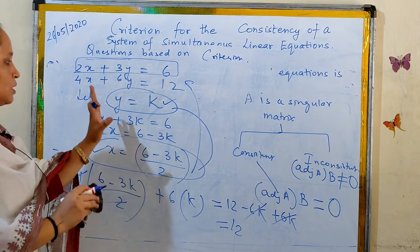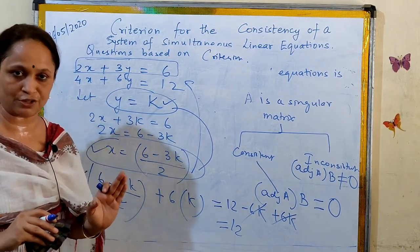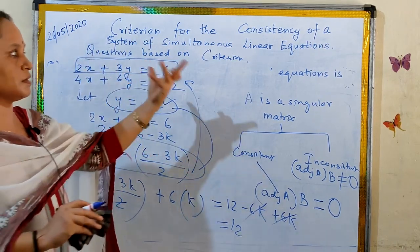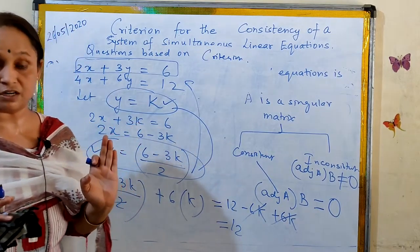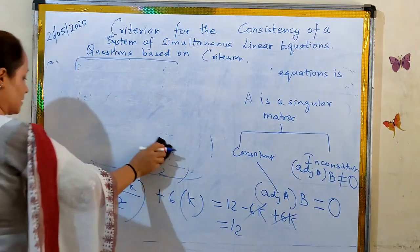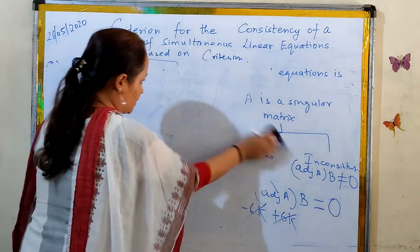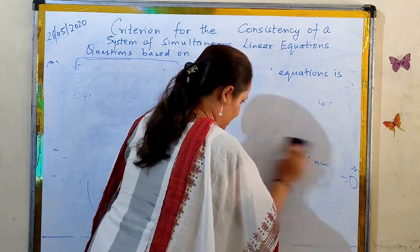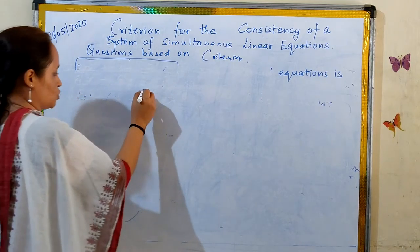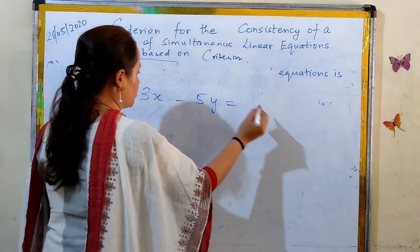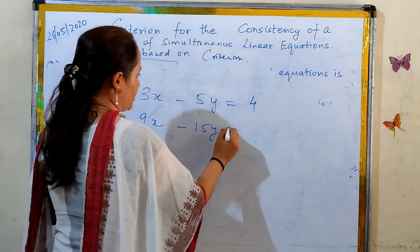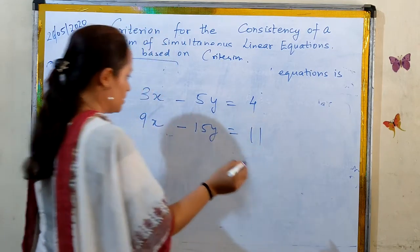We only need to check whether a system is consistent or inconsistent. A consistent system has either a unique solution or infinitely many solutions; an inconsistent system has no solution. Now let's take a second example: 3x minus 5y = 4 and 9x minus 15y = 11. We need to check whether this system is consistent or inconsistent.